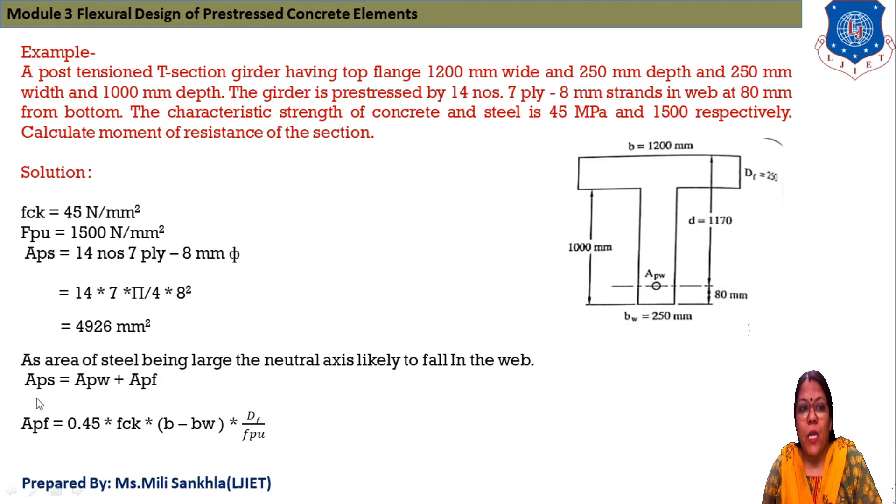Find out area of steel. Being large, the neutral axis is likely to fall in web. APS equals APW plus APF. APF equals 0.45 × FCK × (B - BW) × DF / FPU. This equation is used when reinforcement is lying in web portion.